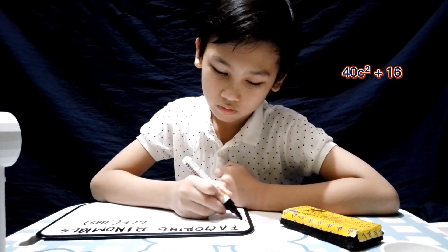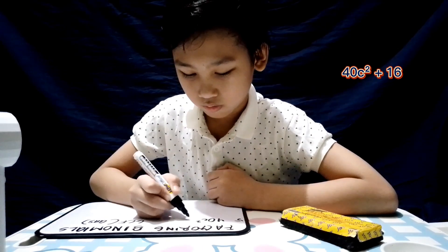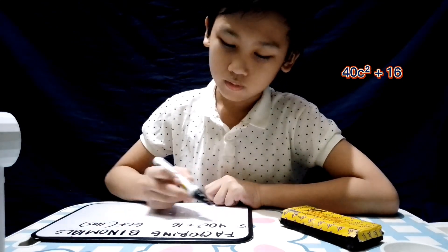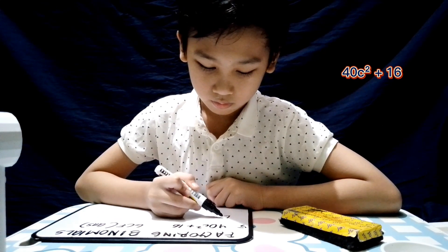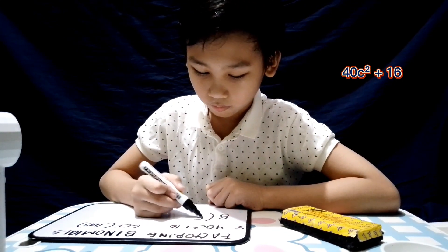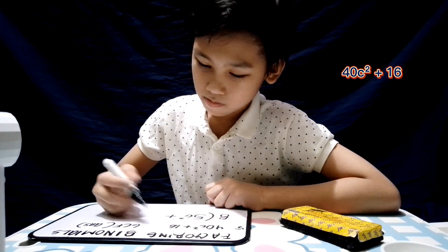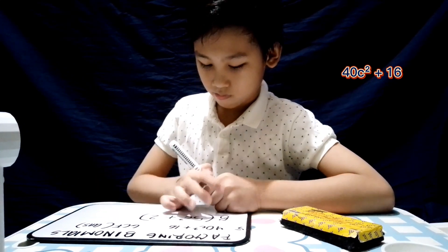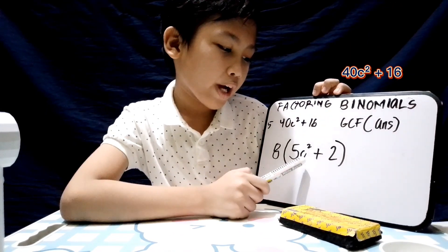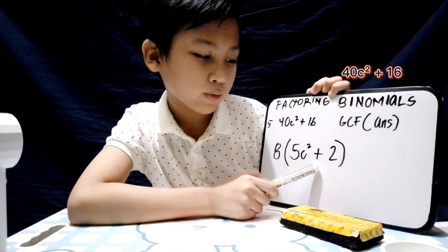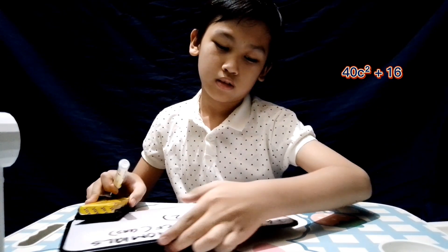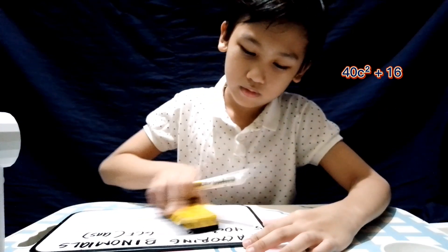Next: 40c squared plus 16. The answer is 8 times open parenthesis 5c squared plus 2, close parenthesis. Very good.